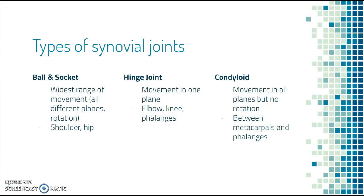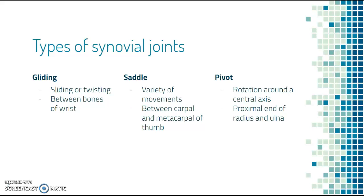Condyloid synovial joints are going to have movement in all planes but no rotation — these are going to be between metacarpals and phalanges, the lower bones of your hand and your finger bones. There are gliding synovial joints, which include sliding or twisting, between the bones of the wrist. Saddle joints have a variety of movements, for example between your carpal and your metacarpal of your thumb. We also have pivot joints, which include rotation around a central axis, at the proximal end of your radius and ulna — those are the two bones below your elbow.